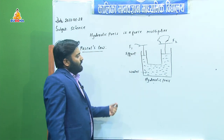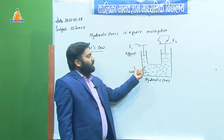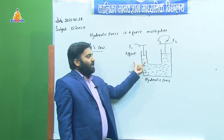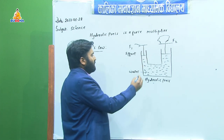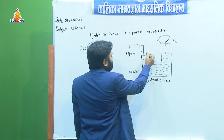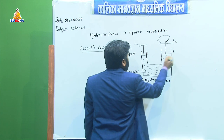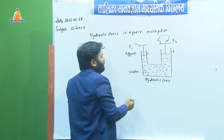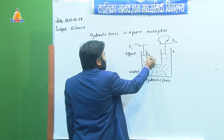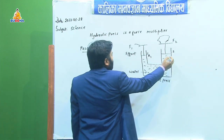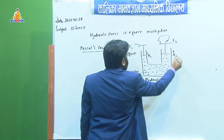Let us consider the cross-sectional areas of the two pistons — piston 1 and piston 2. These two pistons have cross-sectional areas A1 and A2.